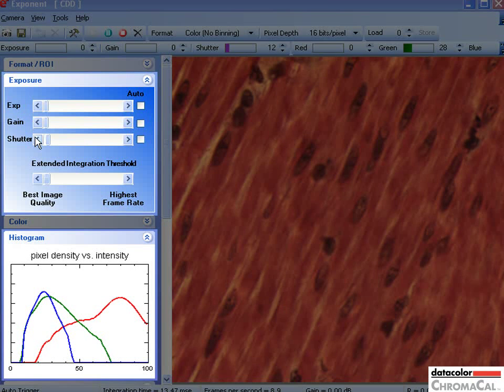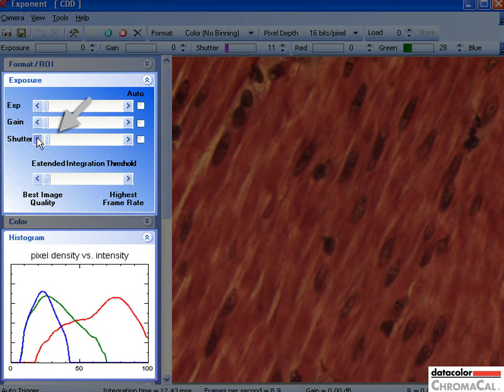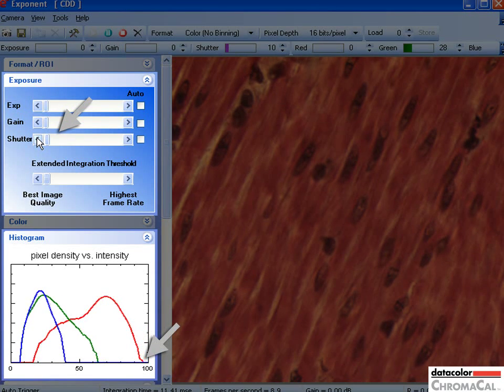Set exposure, here named shutter, until all values are within the dynamic range. You can also use an auto function for the first image.